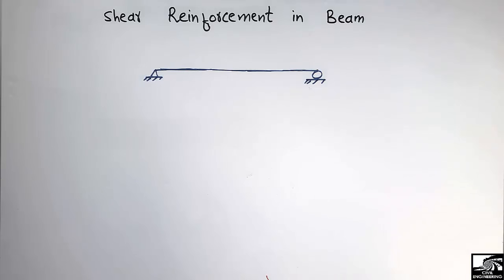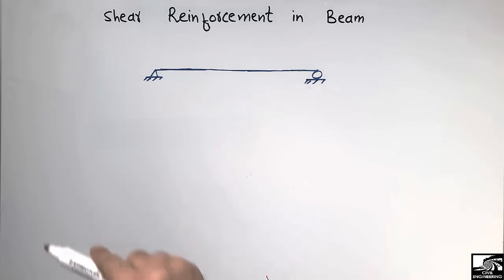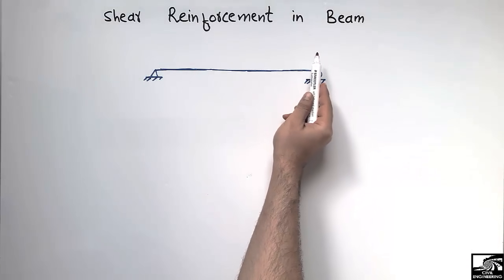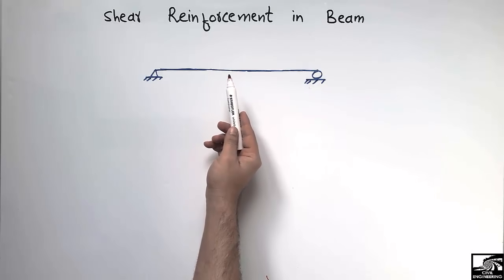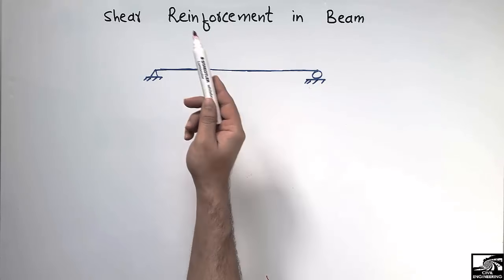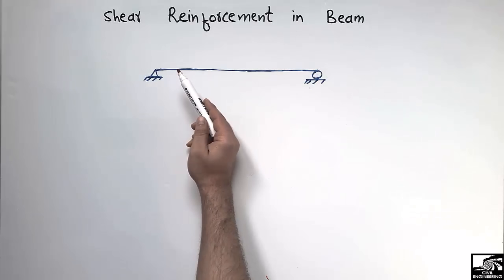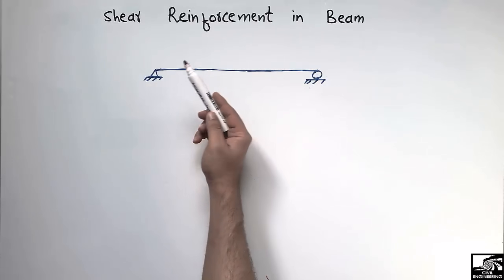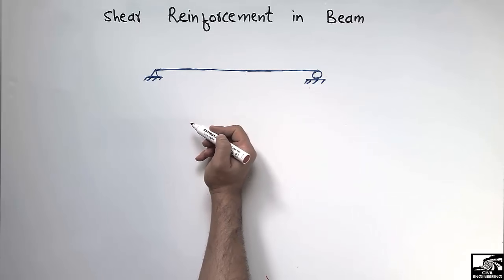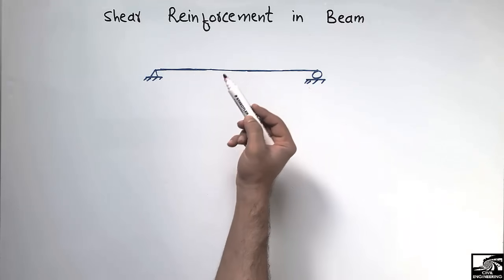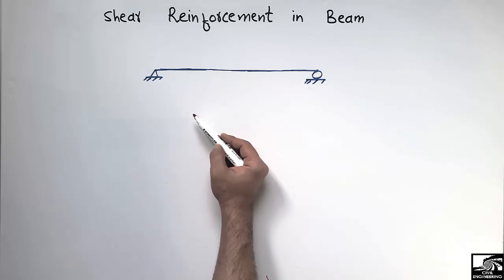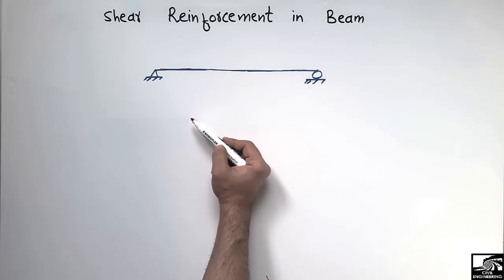Welcome back to the civil engineering YouTube channel. Today's lecture is about shear reinforcement in beams. Shear reinforcement is also called transverse reinforcement. In beams they are called stirrups, while in columns they are called ties. The main purpose of shear reinforcement is to provide resistance to shear forces.